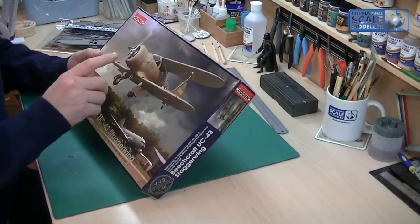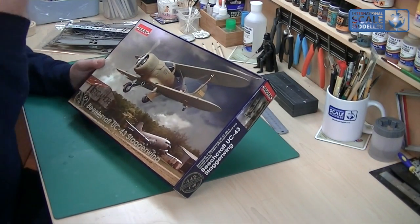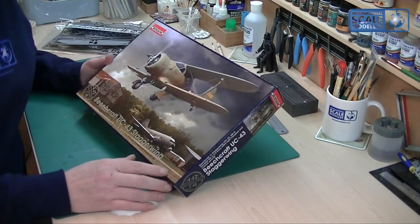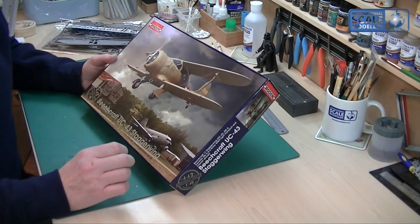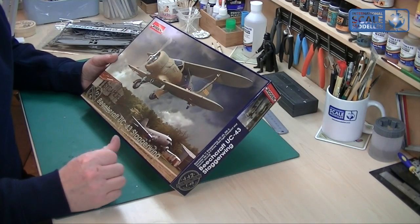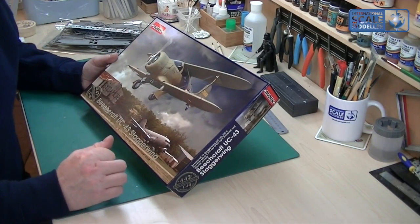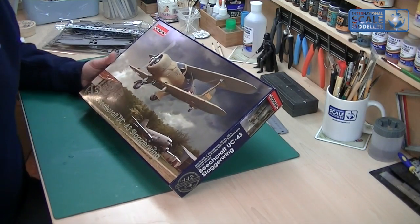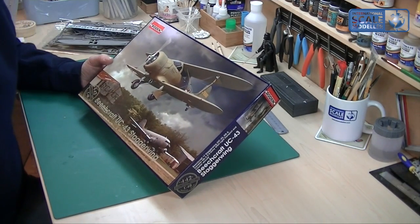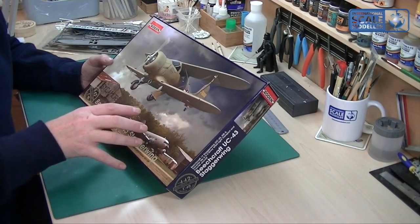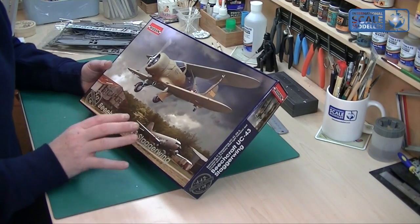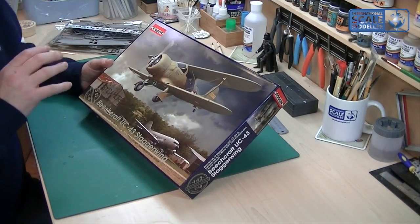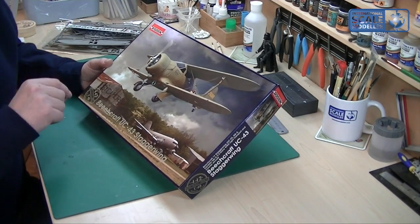So with regards to the Beechcraft UC-43 Staggerwing, I think it's a great looking model. I think that's going to build up nice. I think you're going to need a lot of love and attention and a lot of work to get it looking nice. I think someone like Gary at Maker Models again would make an absolute blinder out of one of these kits, and I think this sort of kit would be straight up his street.